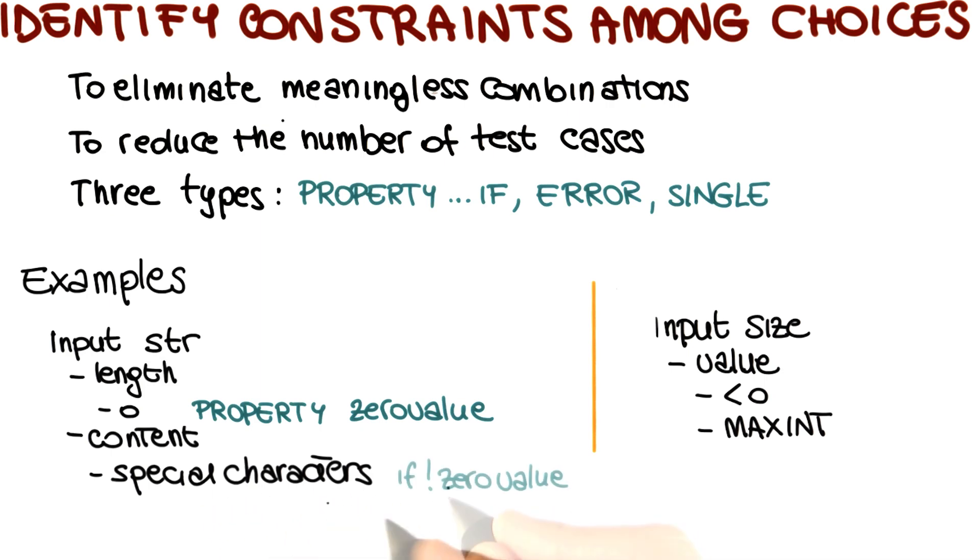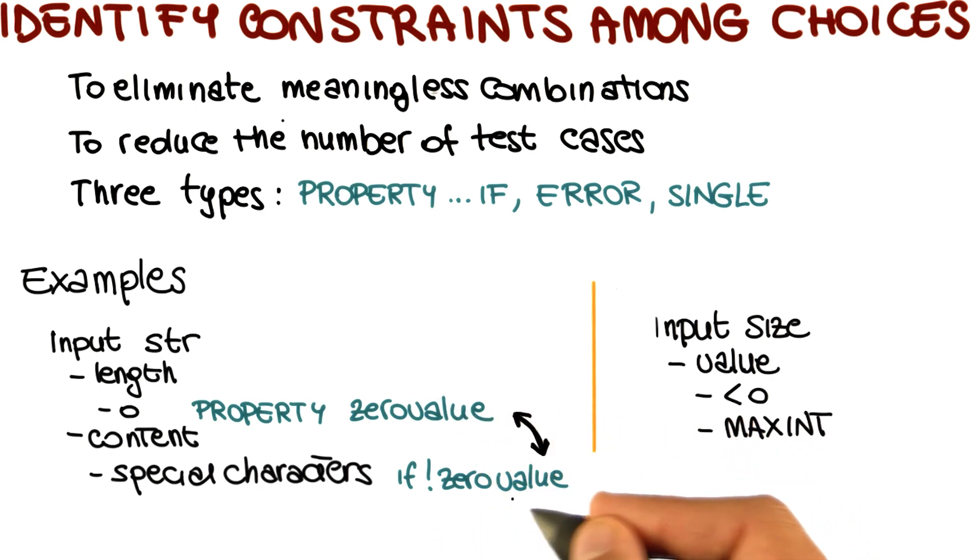not zero. We do this by saying that we consider this only if not zero value, so if zero value is not defined. This pair is an example of a property if case: define a property and use that property.